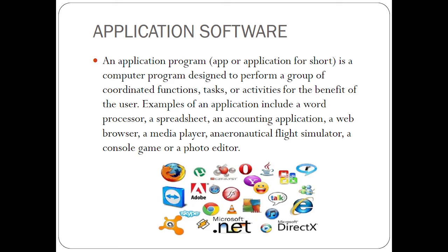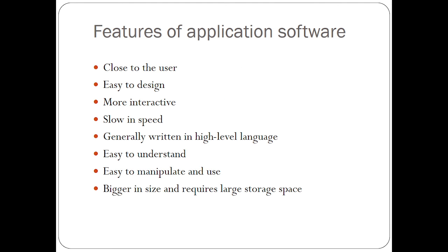Now let's look at application software. Remember, it is closer to the user, so it will always help users perform functions or tasks. Examples of this particular software, as you can see from the diagram, include browsers, Windows applications, media players, and so on. Features of application software: it's closer to the user; unlike system software which is closer to hardware, it is easy to design — that's why we have very many application softwares, which we refer to as apps. They are more interactive, with very nice graphical user interfaces. They are written in high-level, English-like languages, so even a novice can drag and drop and create apps. They are easy to understand, and manipulating them is very easy.